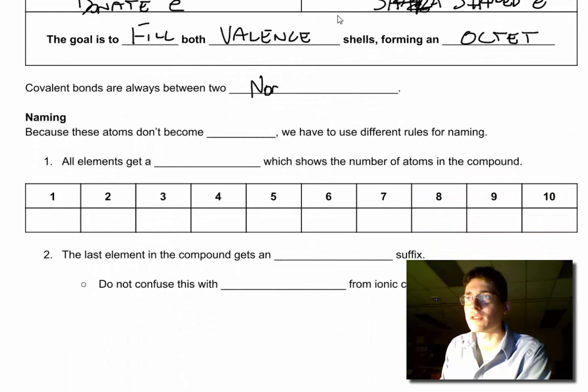Covalent bonds are always between two non-metals. Make sure that we are keeping our atoms straight. If you have a metal and non-metal, it's going to be an ionic bond. Non-metals with non-metals are going to form covalent.